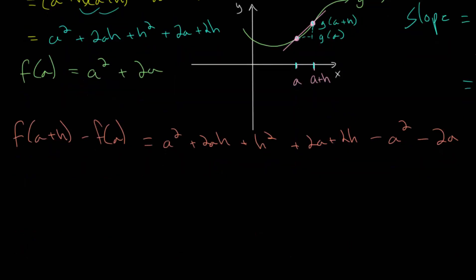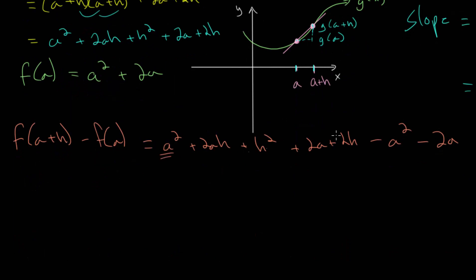And lastly, let's combine like terms. We have a squared minus a squared, and we have 2a minus 2a. So those will cancel out. And this difference here will become 2ah plus h squared plus 2h. So this right here will be our final answer.